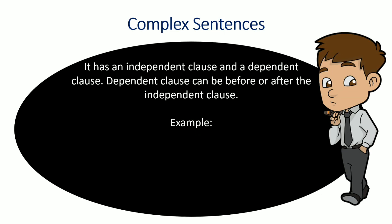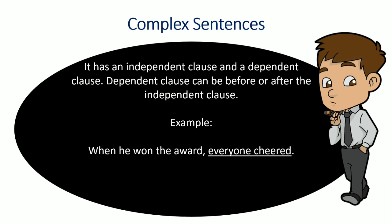Example: 'When he won the award, everyone cheered.' In 'when he won the award,' 'he' is the subject and 'won' is the verb. Now looking at 'everyone cheered' — is it making complete sense on its own? Everyone cheered — where, on what occasion, for whom? These questions are not clear. But when you read the previous sentence, 'when he won the award, everyone cheered,' it becomes clear. That is why the underlined part is the dependent clause, because it is dependent on the previous part of the sentence.